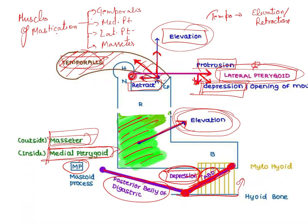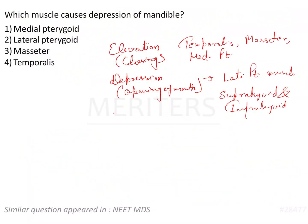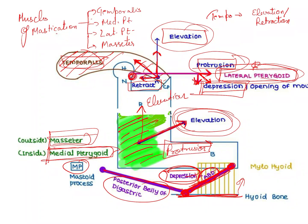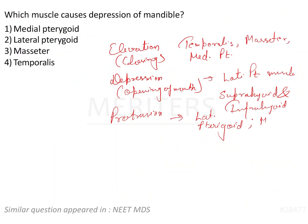The next movement is protrusion, which is mainly caused by the lateral pterygoid muscle. Looking carefully at the vector, one component is toward elevation and another toward protrusion. So protrusion is mainly performed by the lateral pterygoid, but there is also some contribution from the medial pterygoid on the inside and the masseter on the outside.